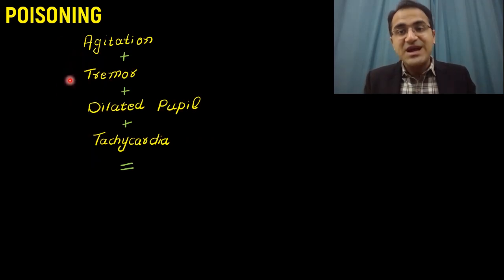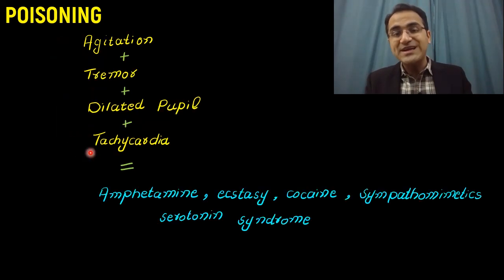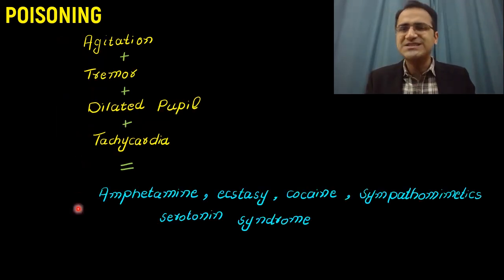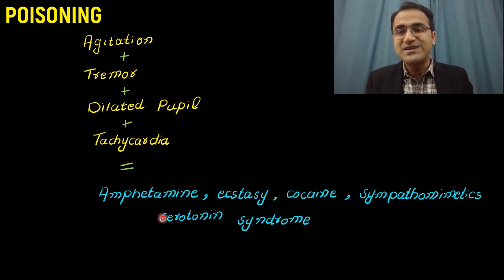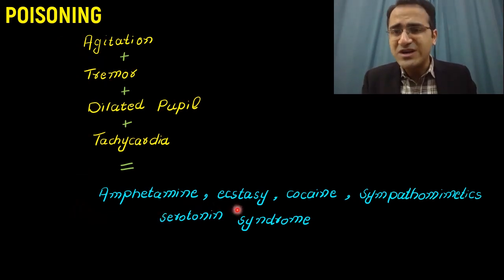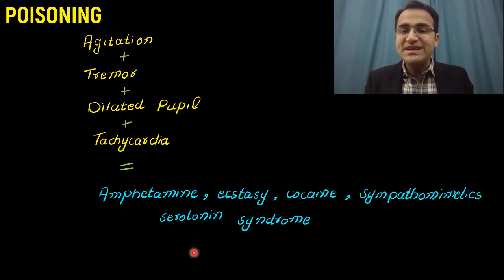If you see agitation, tremor, and dilated pupils with tachycardia, this is commonly found with stimulant drugs — all drugs that increase sympathetic activity like amphetamine, ecstasy, cocaine, sympathomimetics, and serotonin syndrome.